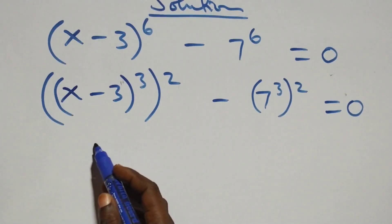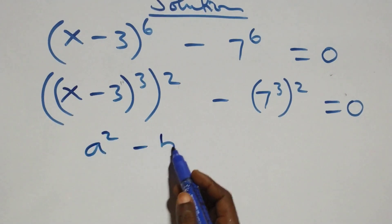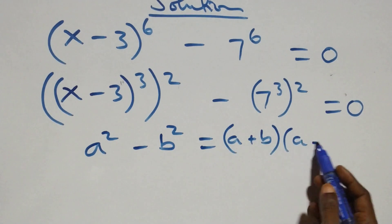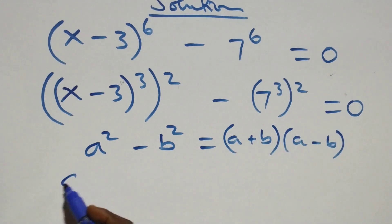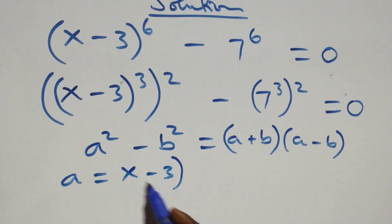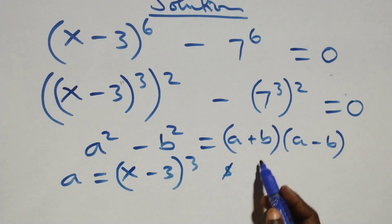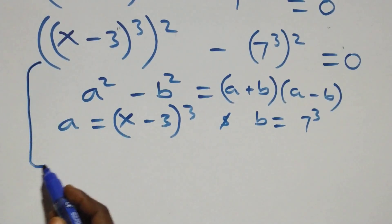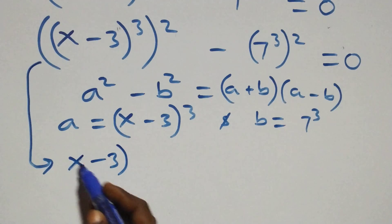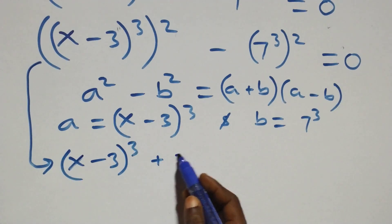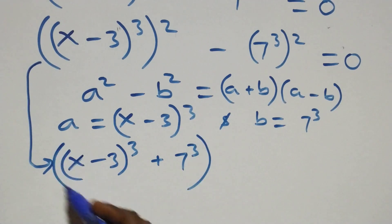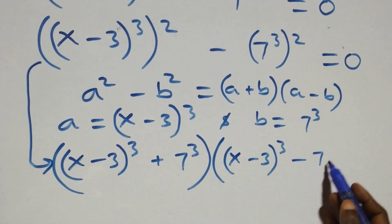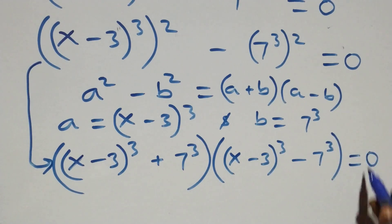This follows the difference of two squares: a squared minus b squared equals (a plus b)(a minus b). Here a stands for (x minus 3)^3 and b stands for 7^3. Applying this, we get [(x minus 3)^3 plus 7^3] times [(x minus 3)^3 minus 7^3] equals 0.